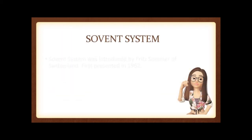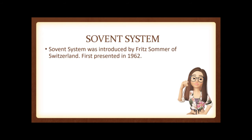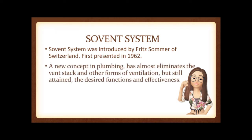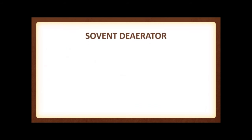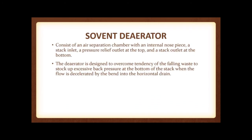The sovent system was introduced by Fritz Sommer of Switzerland and first presented in 1962. It is a new concept in plumbing that almost eliminates the vent stack and other forms of ventilation while still attaining the desired functions and effectiveness. The aerator consists of an air separation chamber with an internal nose piece, a stack inlet, a pressure relief outlet at the top, and a stack outlet at the bottom. The aerator is designed to overcome the tendency of falling waste to build up excessive back pressure at the bottom of the stack, and the flow is decelerated into the horizontal drain.